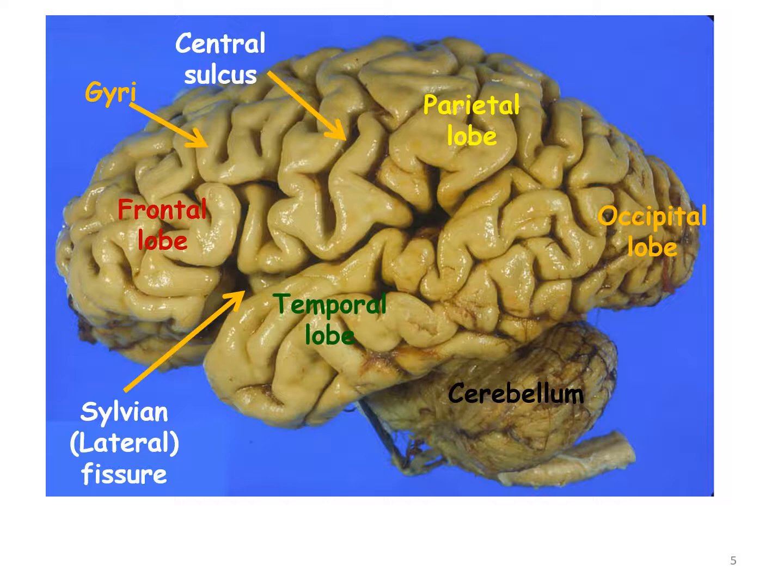The brain is covered by three layers of meninges called the dura mater, the arachnoid mater, and the pia mater. The brain floats in a fluid produced by the brain called the cerebrospinal fluid. This fluid protects the brain from concussions when the head moves.